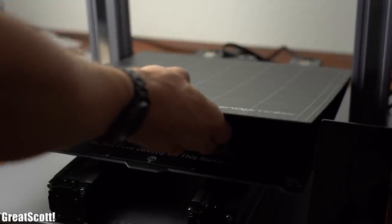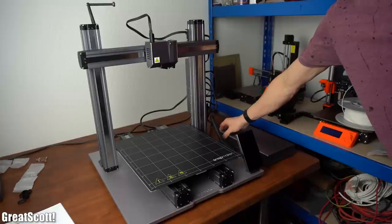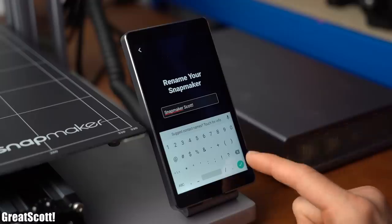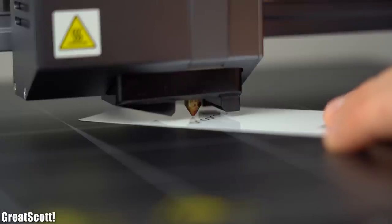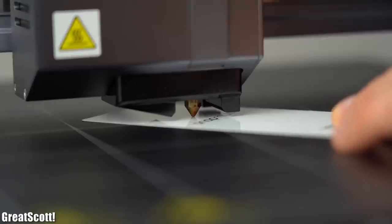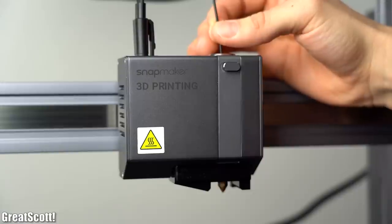And after placing the removable beds onto the heated beds it was finally time to flip the main power switch and do the initial wifi setup. As soon as that was done I performed the usual 3D printer Z offset calibration and inserted the included black PLA filament into the printhead.